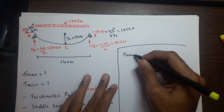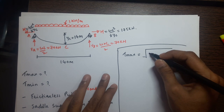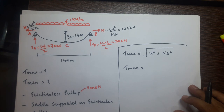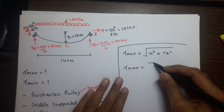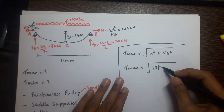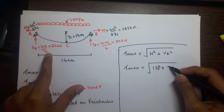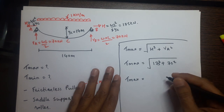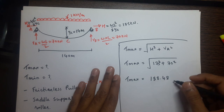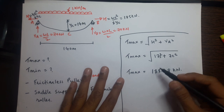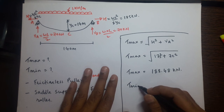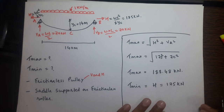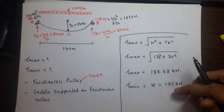The formula for T_max is the square root of H² plus V_A². So T_max = √(175² + 70²) = 188.48 kilonewtons. The minimum tension in the cable equals H, which is 175 kilonewtons.